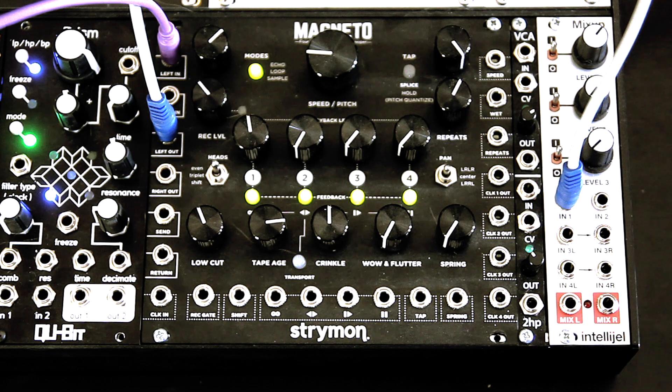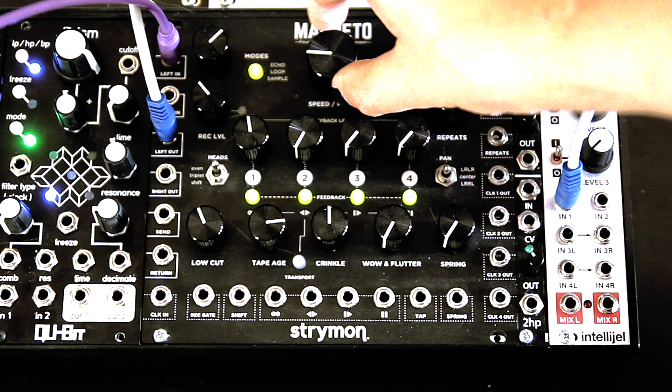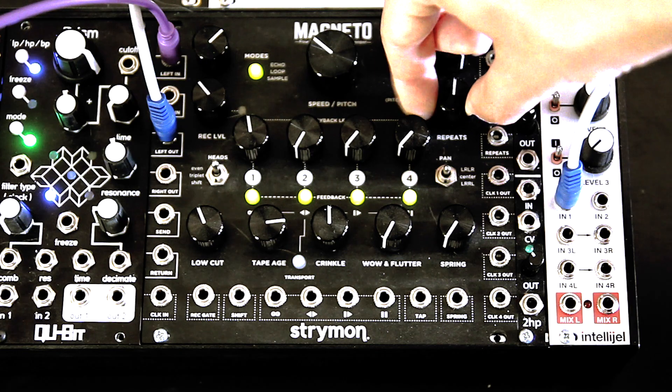We also observe exponential behavior in delay effects processors like our Strymon-Magneto. The time and repeats parameters change the rate of the exponential decay.